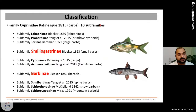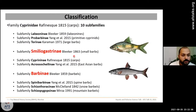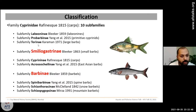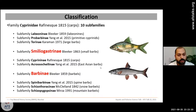Small barbs belong to the family Cyprinidae, subfamily Smiliogastrinae. Looking at the classification of Cyprinidae, there are about 10 subfamilies, including Labeoninae and Torinae — Torini being the subfamily for Tor or Hypselobarbus, the large barbs. Smiliogastrinae has been designated specifically to small barbs and includes both Asian barbs and Afrotropical barbs from tropical regions of Africa.